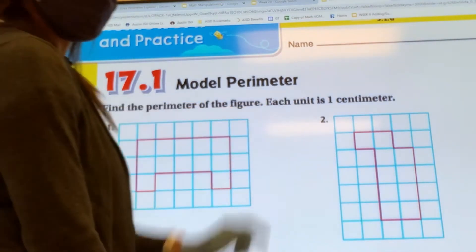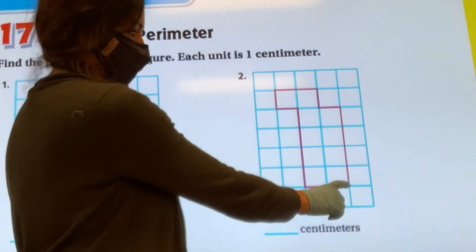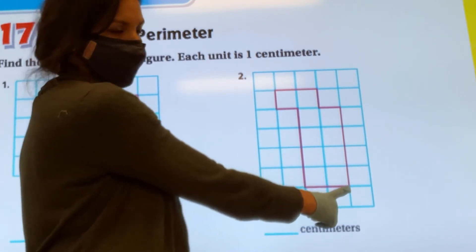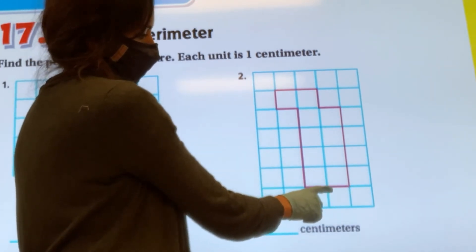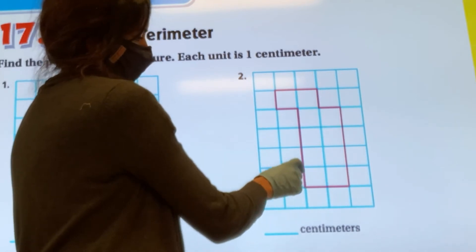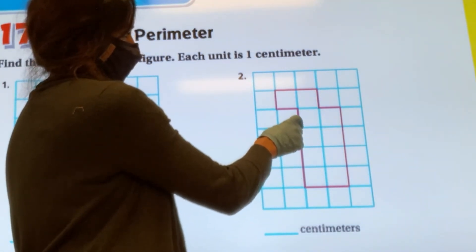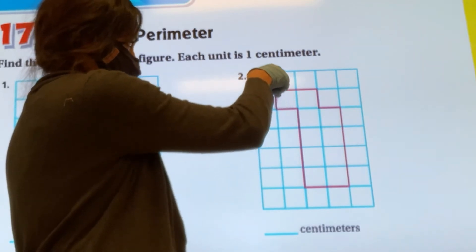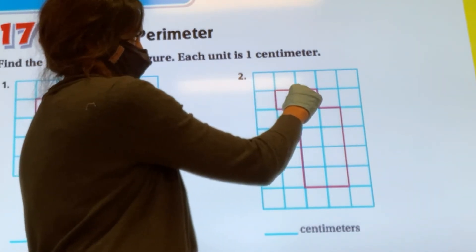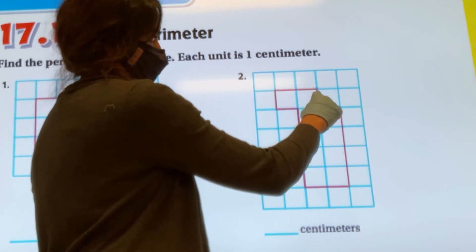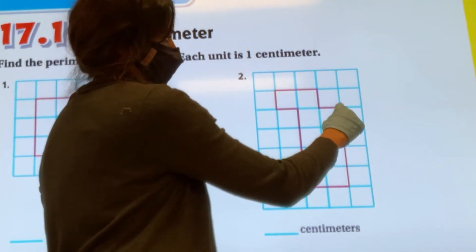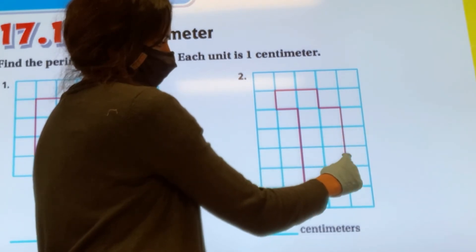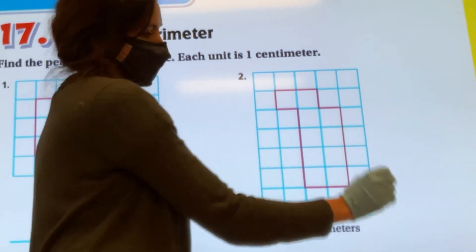Let's go ahead and try another example. Again, you may start anywhere so let's begin at the bottom. So ready, set, go. 1, 2, 3, 4, 5, 6, 7, 8, 9, 10, 11, 12, 13, 14, 15, 16.